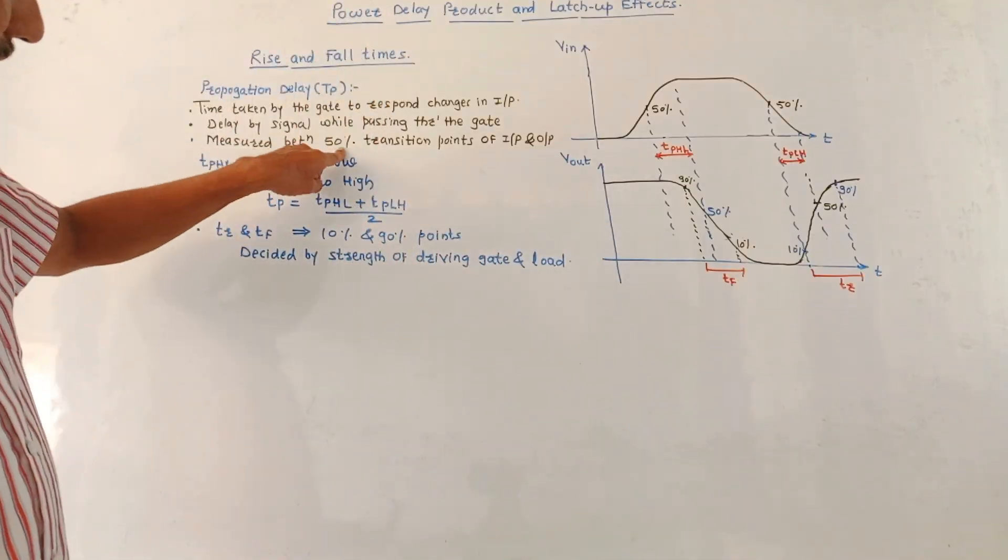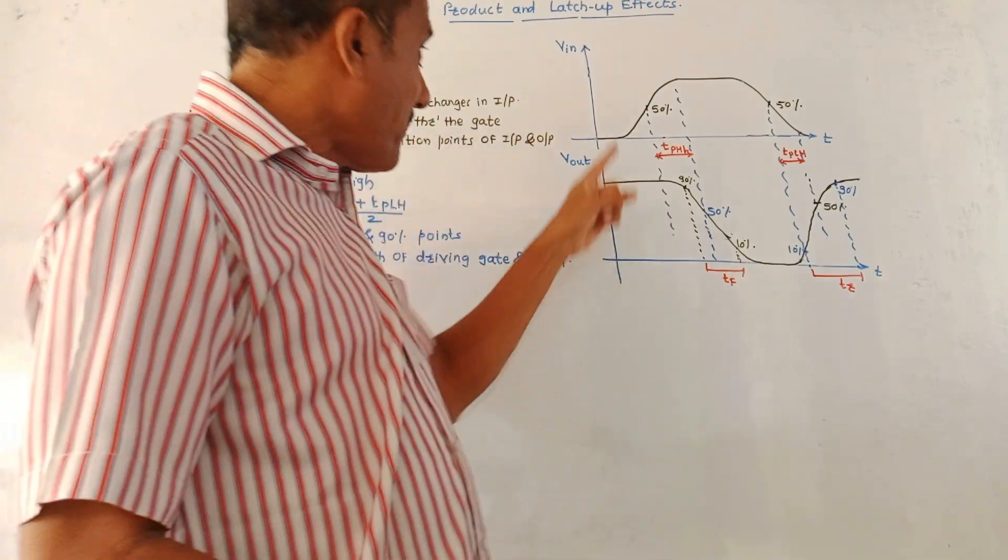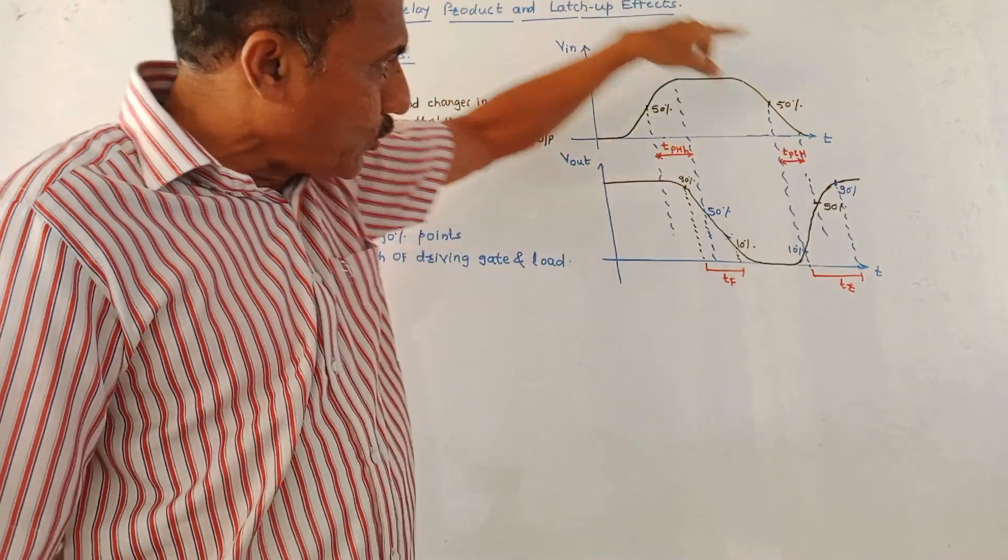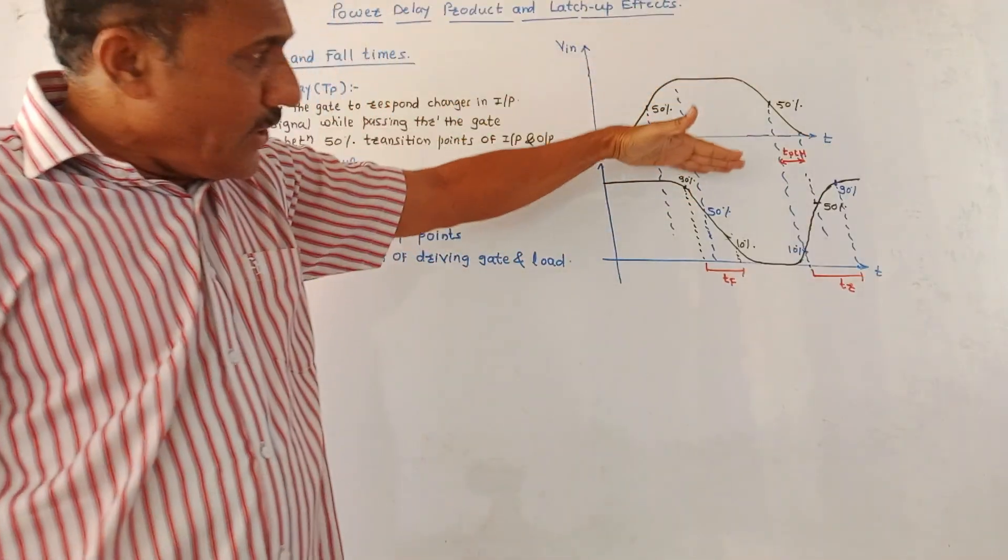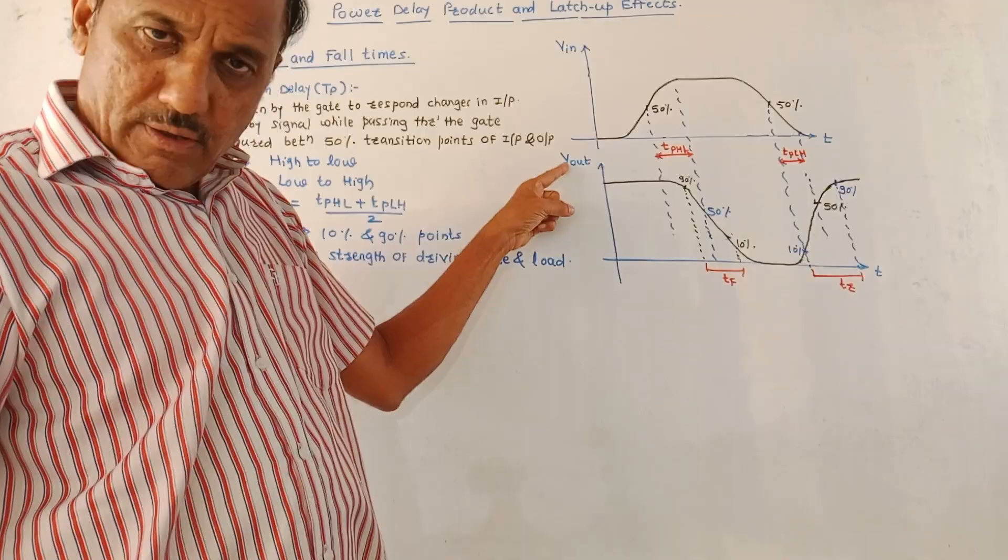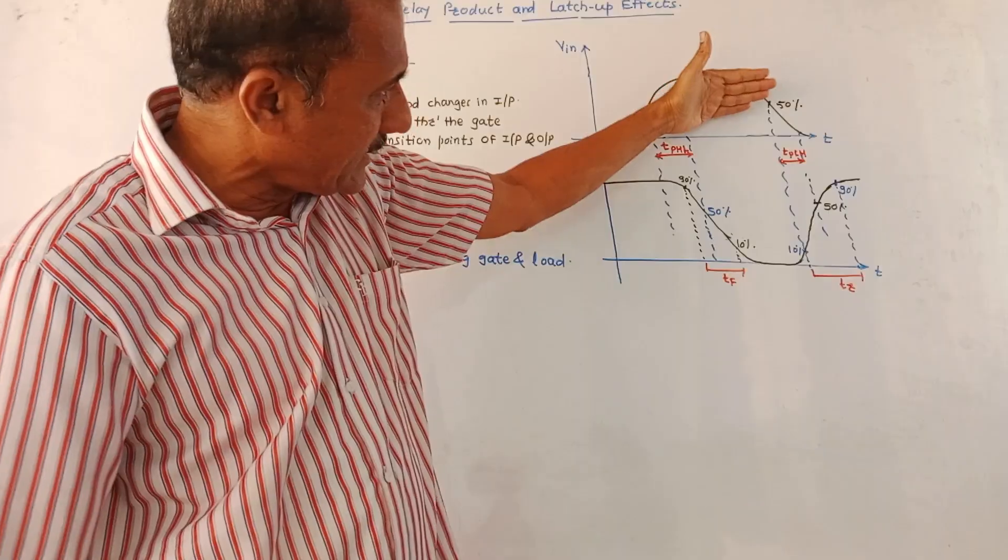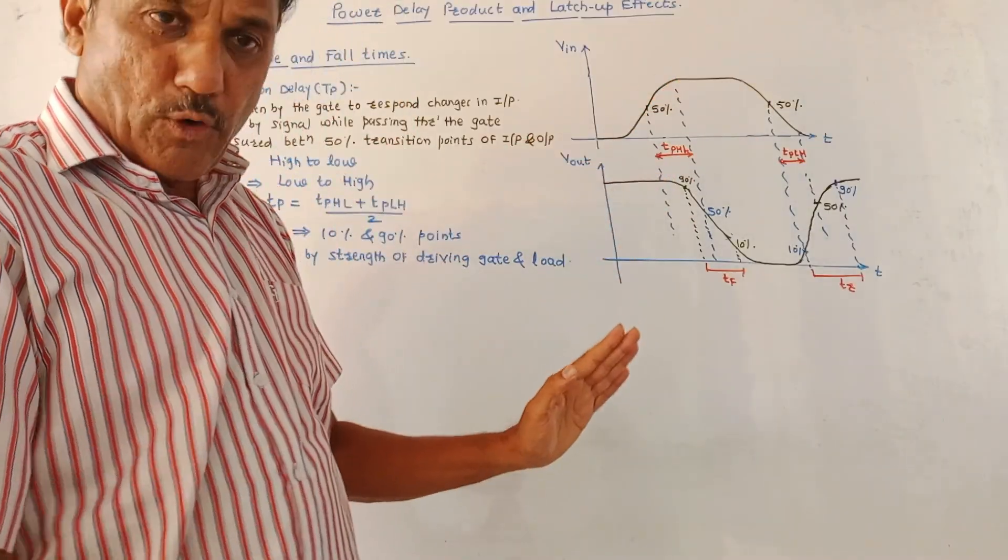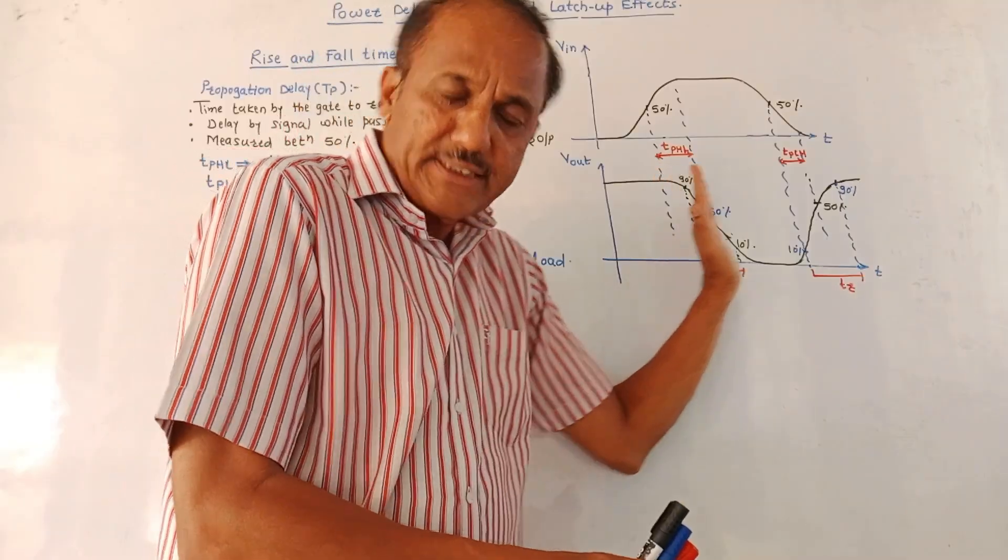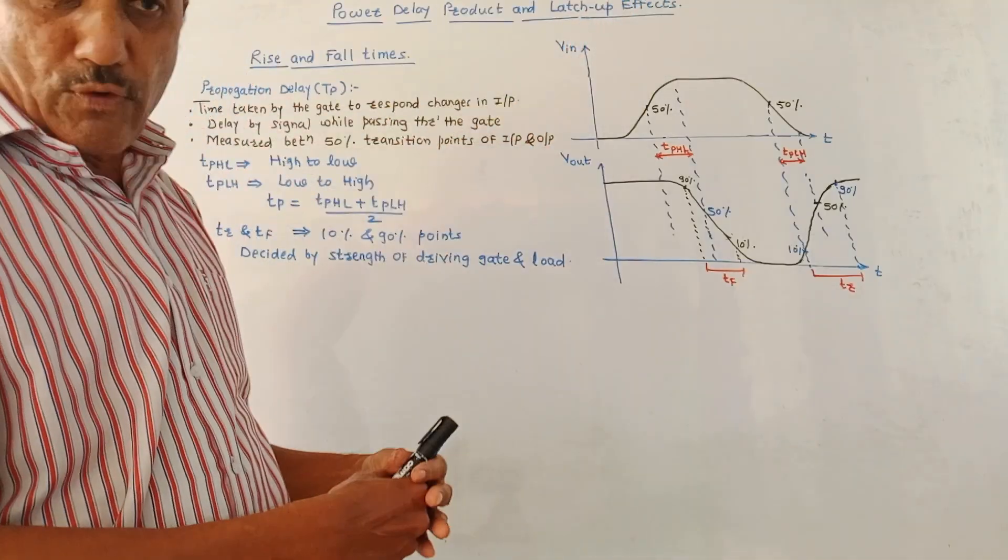It is measured between 50% of the transition points of input and output waveforms. This is the input waveform, graph of V in input voltage versus time. When we are talking about CMOS logic, you are getting inverted output. The output waveform, V out versus T, is inverted version of the input waveform. But there is certain delay. This output waveform is shifted, delayed version and inverted compared to the input waveform.